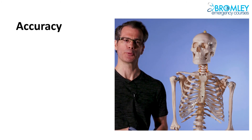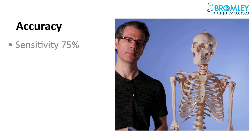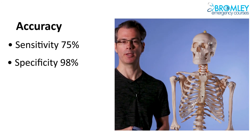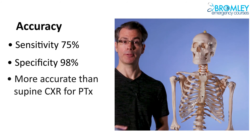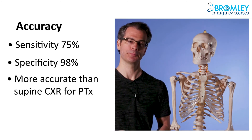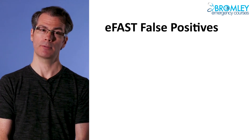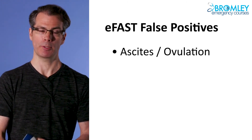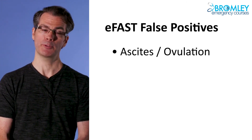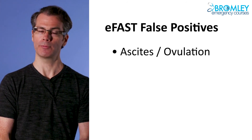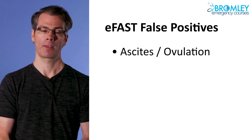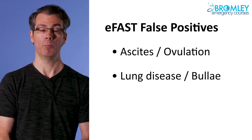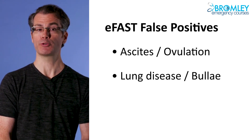How accurate is ultrasound for pneumothorax? Sensitivity is okay at 75%. If you can find a lung point, it's very specific at 98%. Importantly, it's more accurate than a supine chest X-ray for pneumothorax. There are some false positives with E-FAST: patients with ascites can have positive FAST exams because you'll see free fluid in their abdomen, or females who are mid-cycle can have a small amount of physiological fluid during ovulation. In terms of the lung, if the patient has COPD and some bullous disease in the apices, this can also cause reduced sliding.